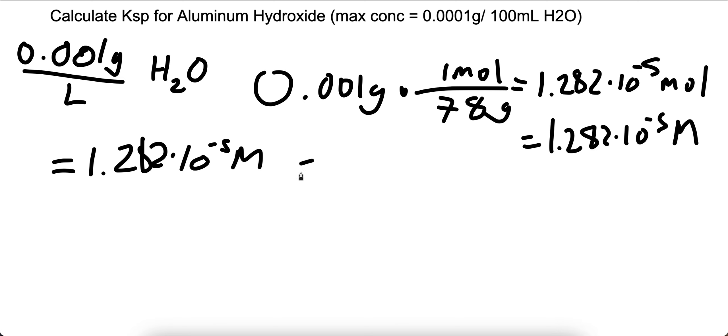On the other hand, OH has a 3 to 1 ratio to the entire compound, so we'll multiply this by 3. That becomes 3.846 times 10 to the negative 5th molar.